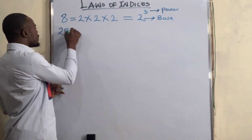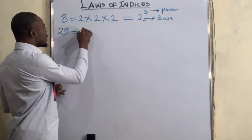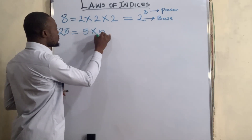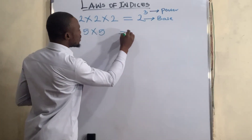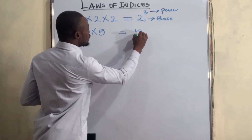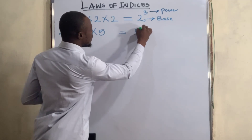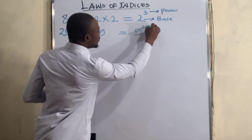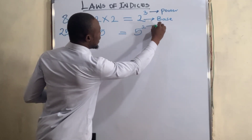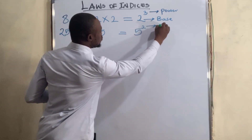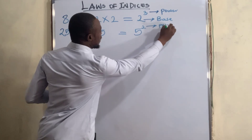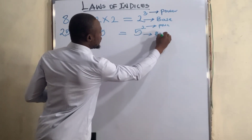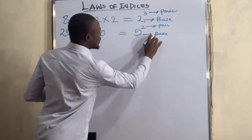25 is written as five times five, which is five squared — five in two places. So likewise, this two is the power and five is the base.